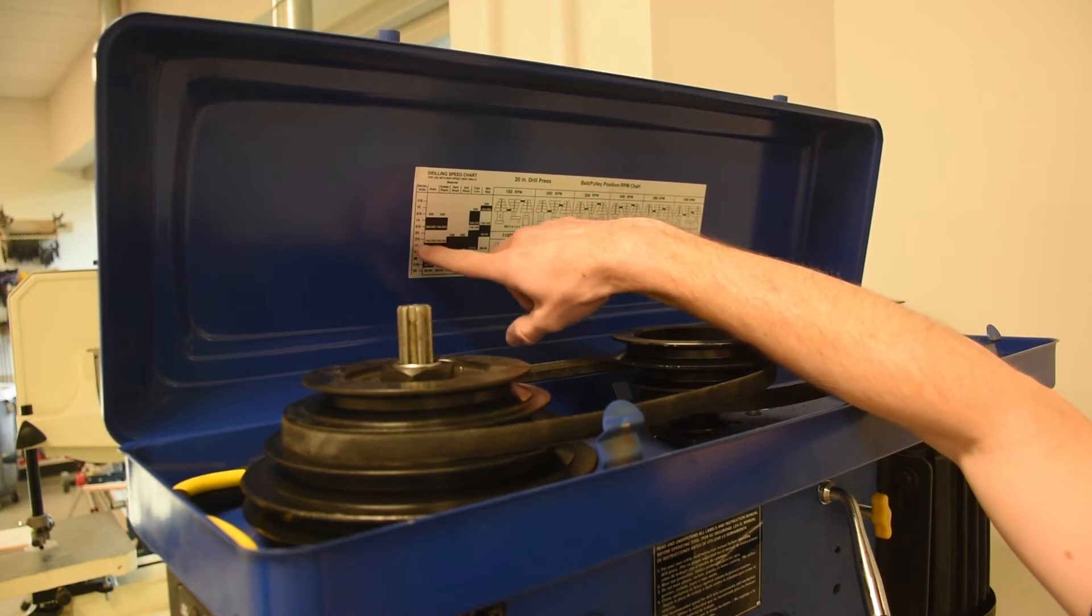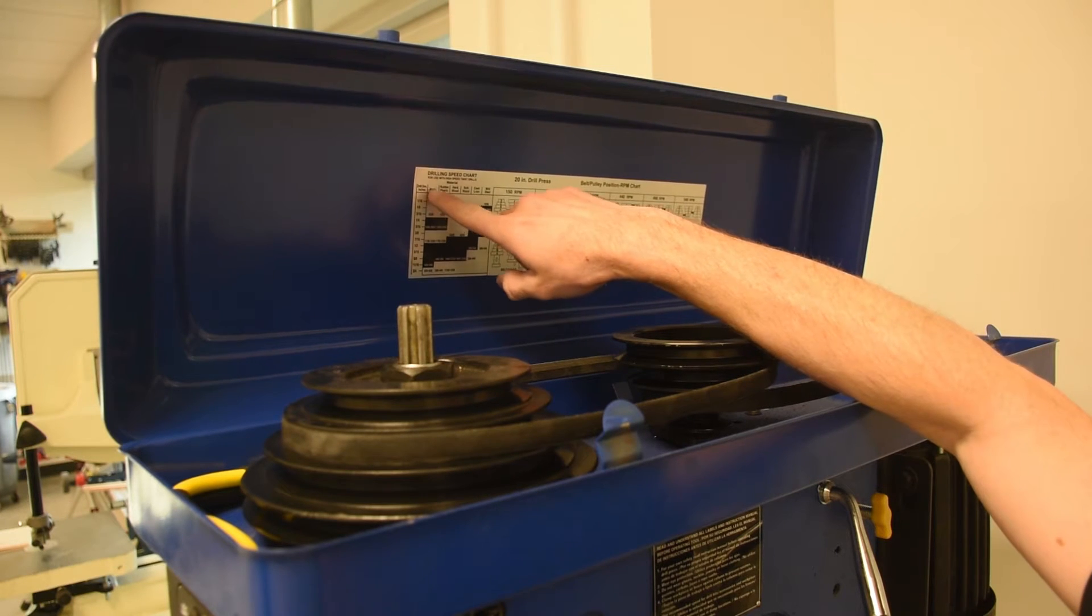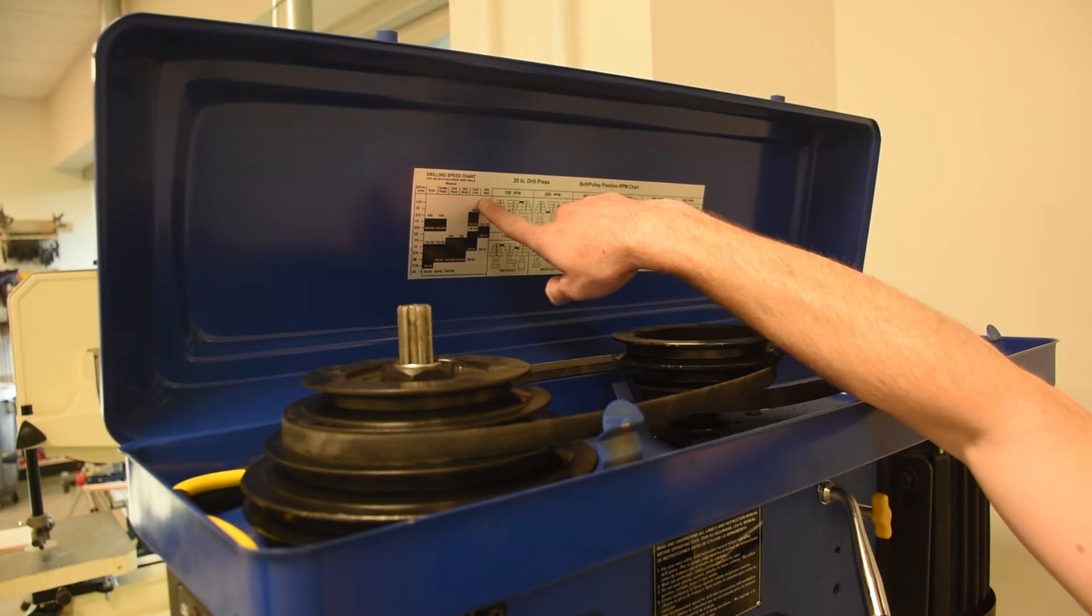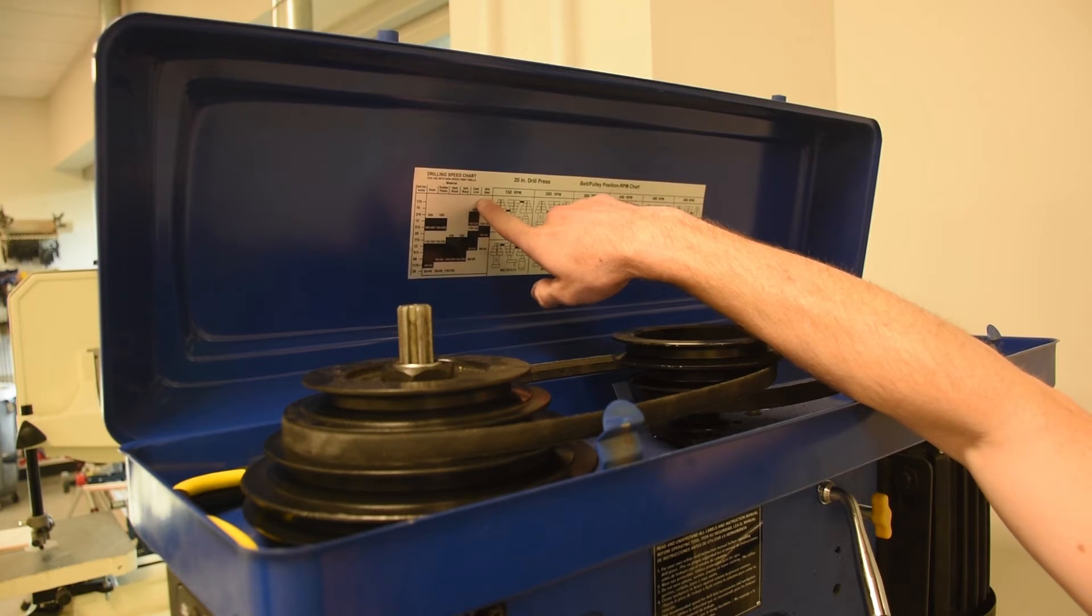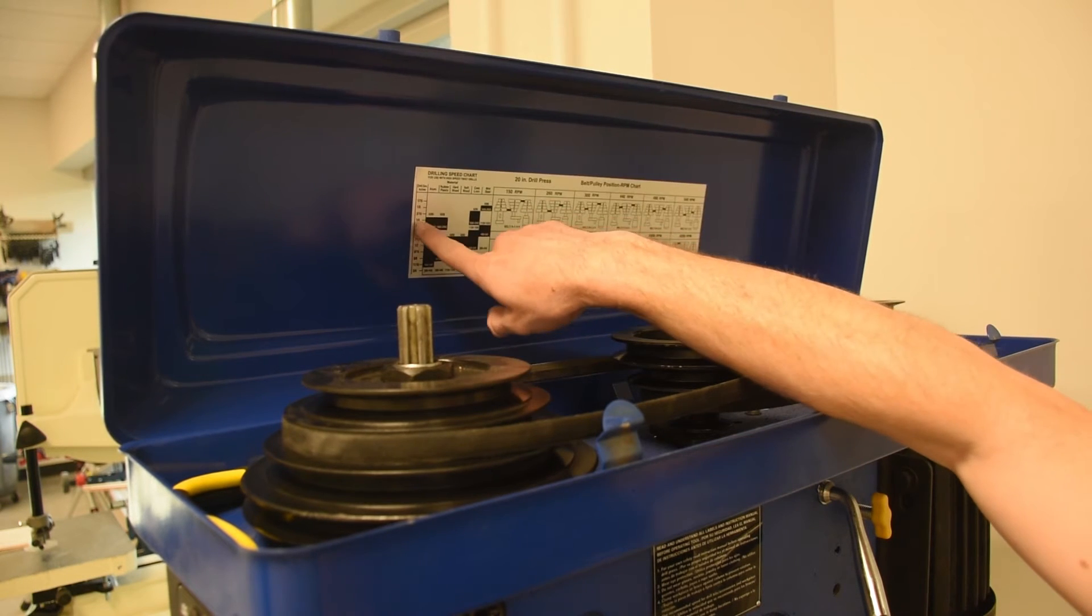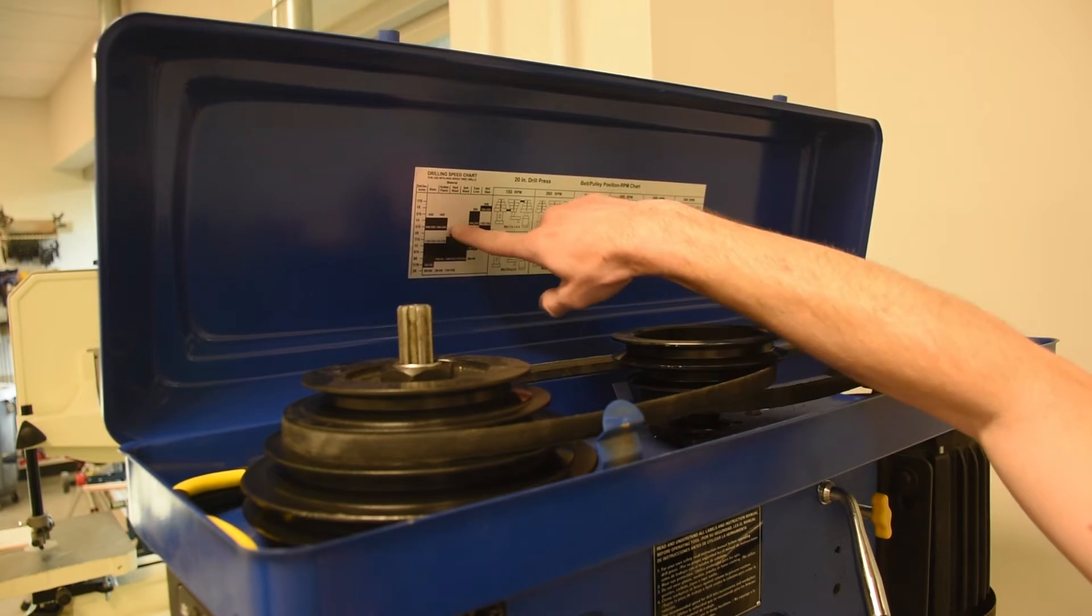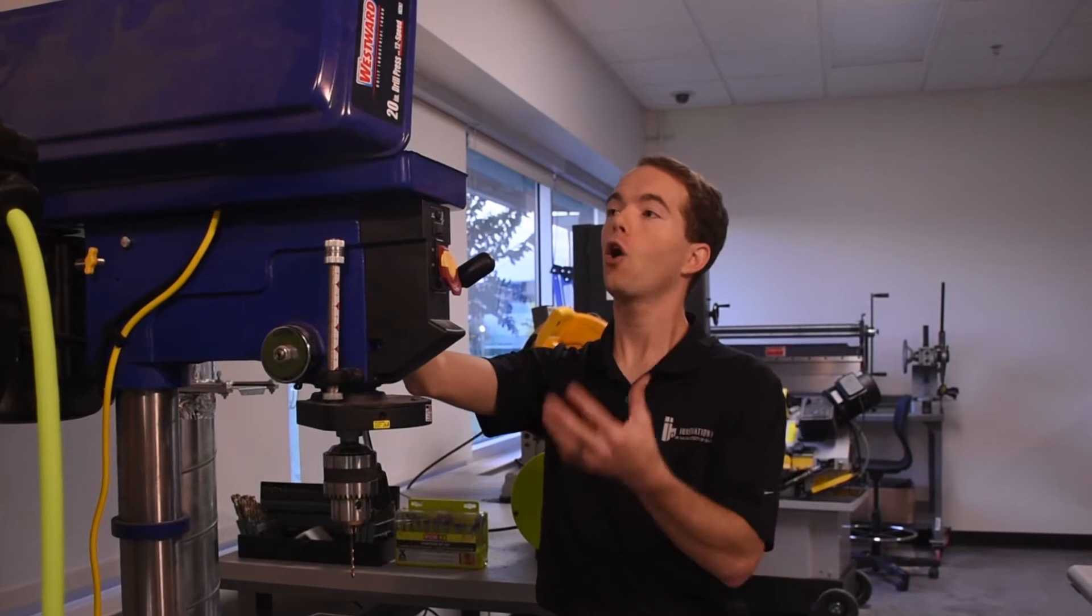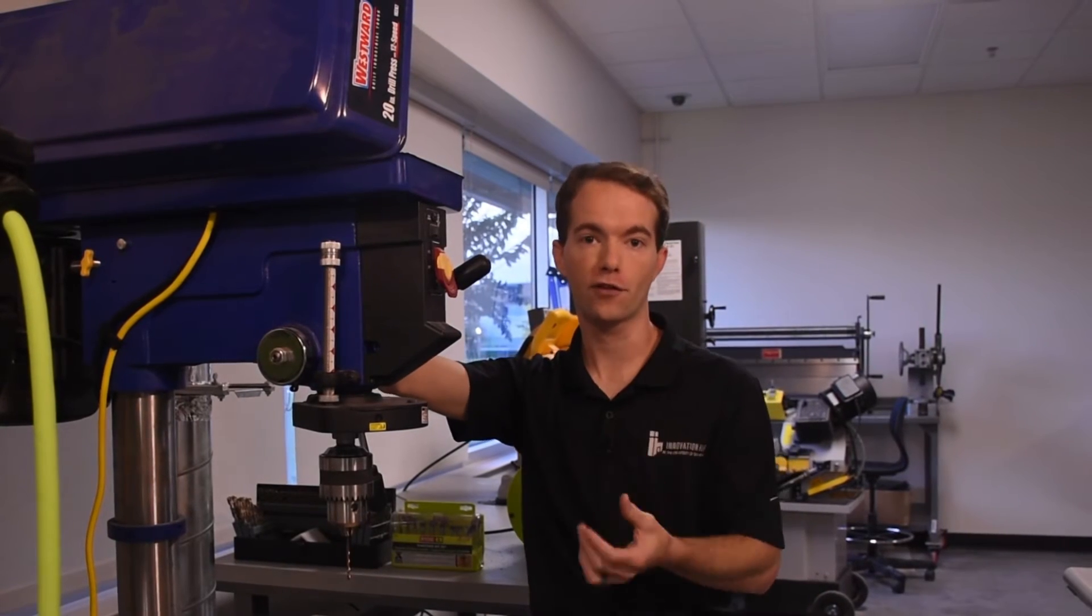So on the left-hand side, the drilling speed chart, it shows you you've got drill diameter in inches along the left-hand column. Across the top row are all the different materials you could possibly want to go through. And then you simply, at the intersection of those two, is the speed you should be running at. Now, all these tables are based on that surface feet per minute.